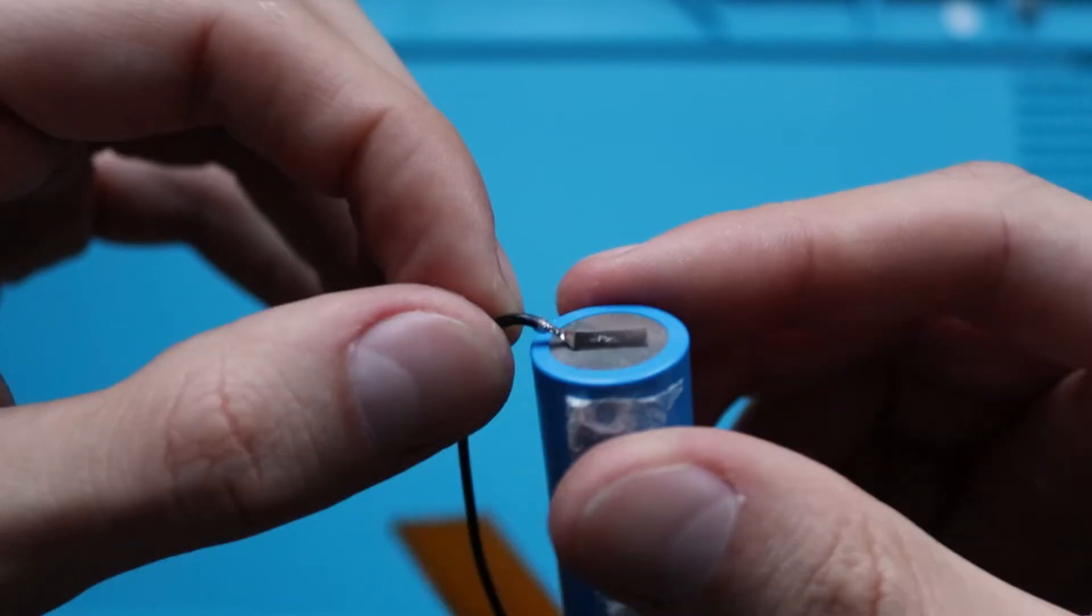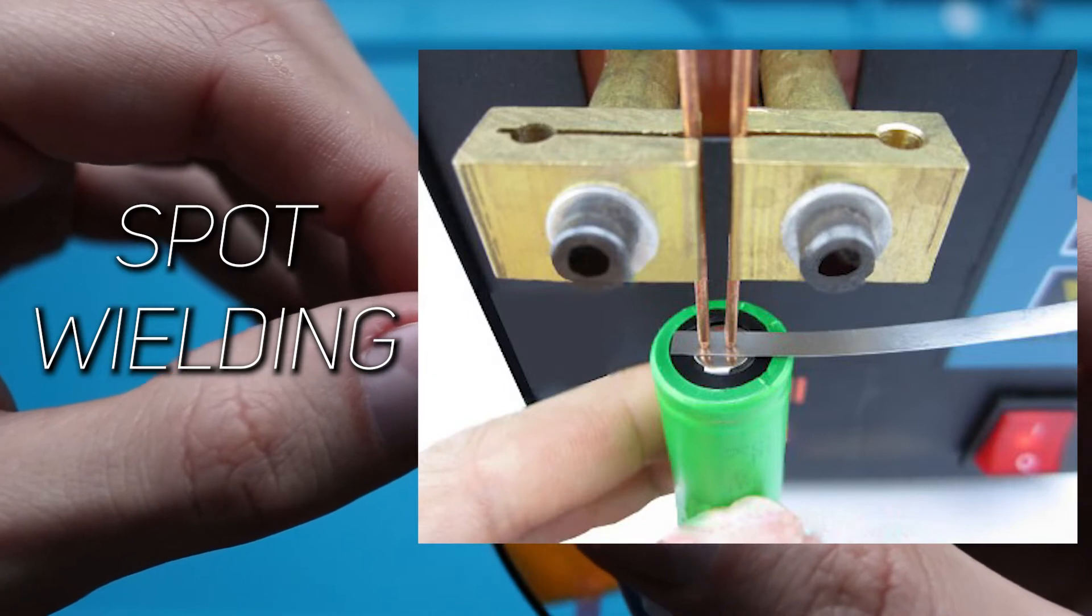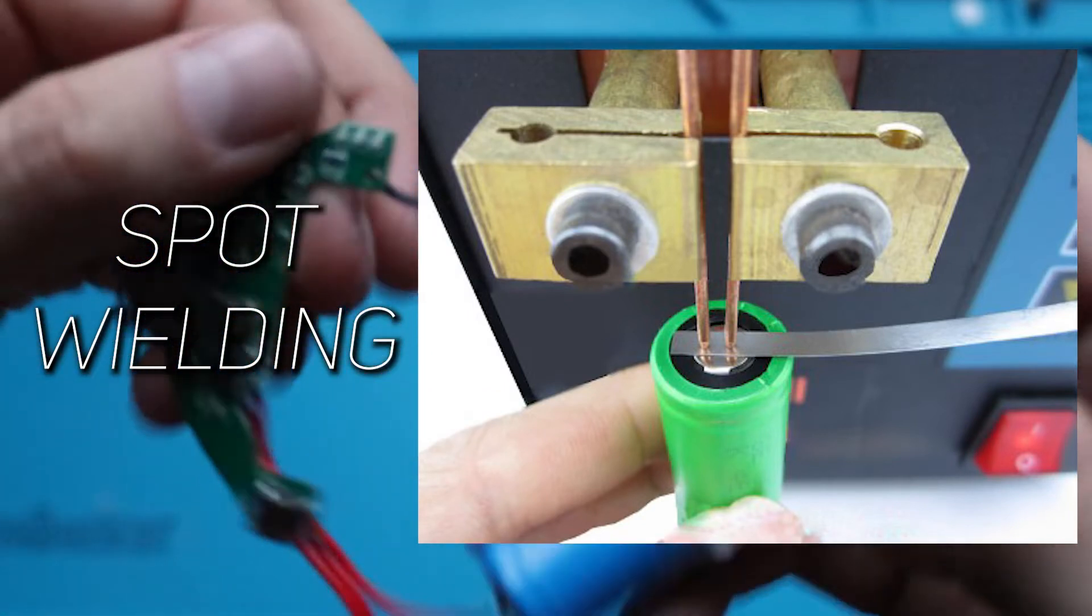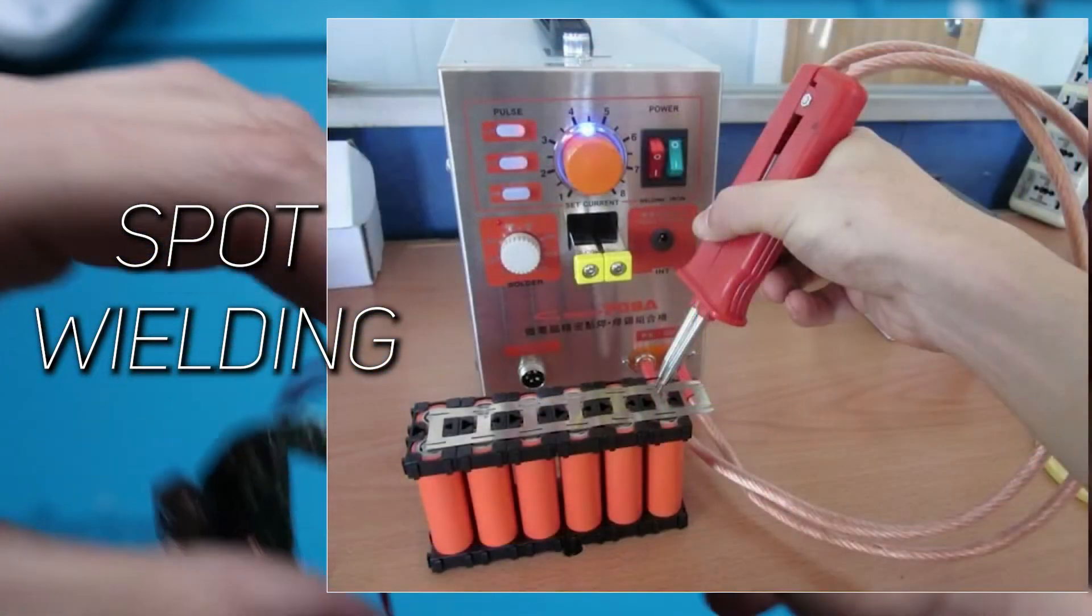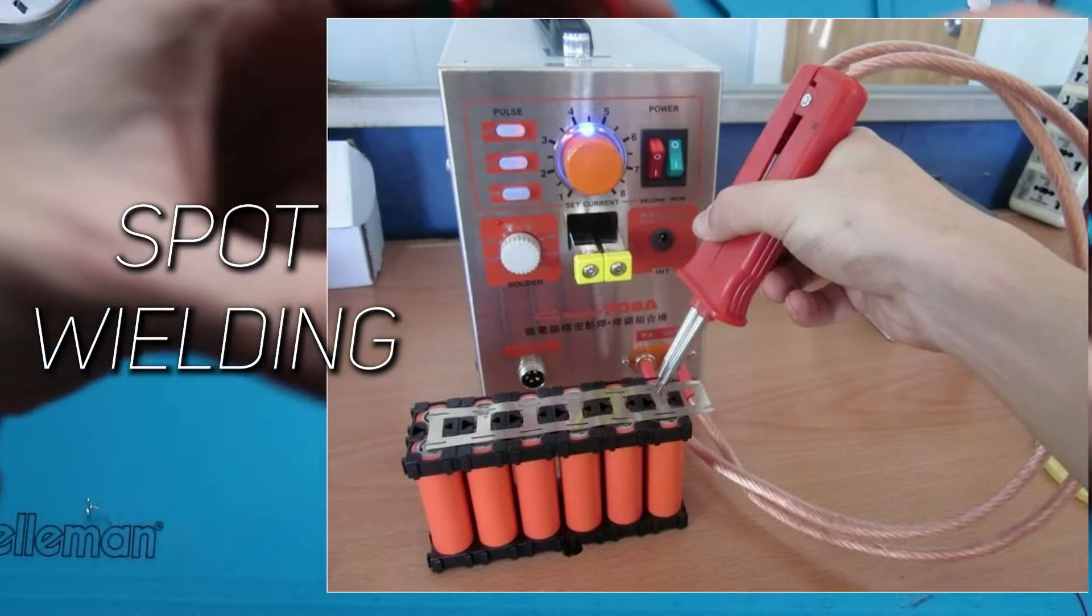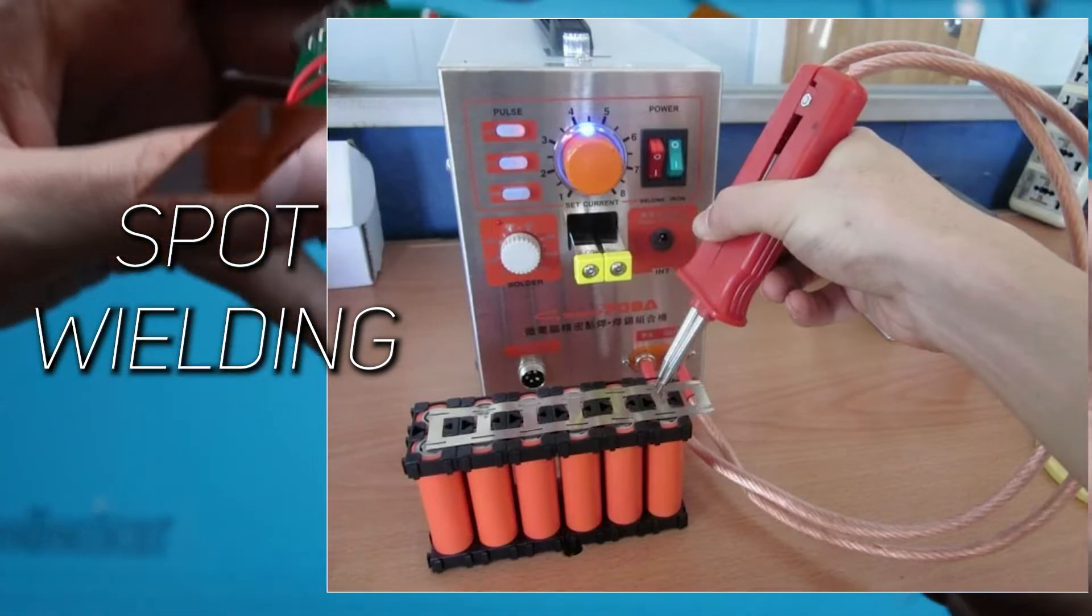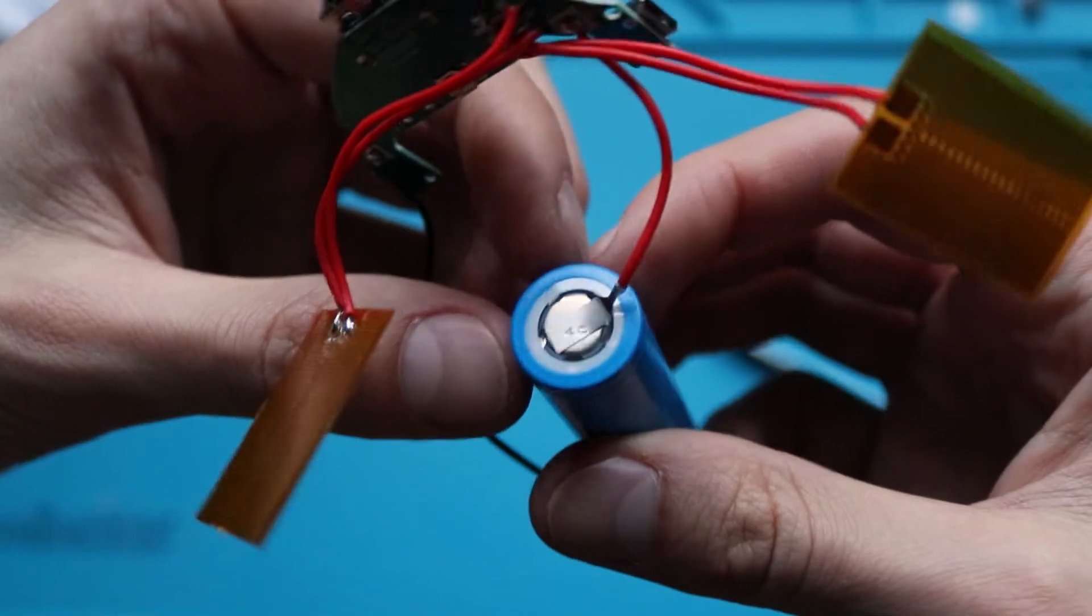But during welding, metal melts very locally, without heating the whole battery. That is the safe way of connecting wires to the battery, which everybody uses. And if you ever create a device with a battery and you have to attach wires to it, use such a method.